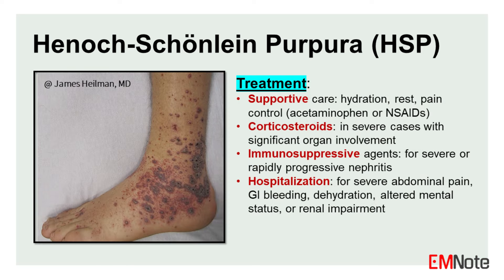Treatment. HSP is a self-limiting condition in most cases, and treatment is primarily supportive, focusing on alleviating symptoms and preventing complications. Supportive care includes adequate hydration, rest, and pain management with acetaminophen or NSAIDs. NSAIDs are contraindicated in cases of gastrointestinal bleeding or renal involvement.